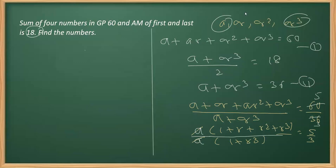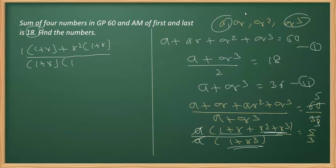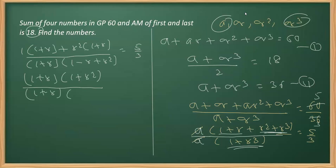In the numerator, we do factorization by regrouping: taking 1 as common from the first two terms gives (1 + r), and taking r² as common from the last two terms gives r²(1 + r). So the numerator becomes (1 + r)(1 + r²). In the denominator, we apply the a³ + b³ identity: 1 + r³ = (1 + r)(1 - r + r²). This gives (1 + r)(1 + r²) / [(1 + r)(1 - r + r²)] = 5/3.